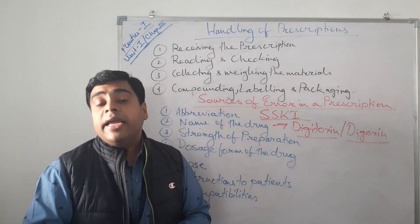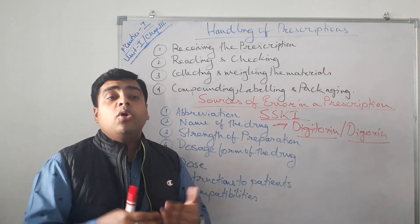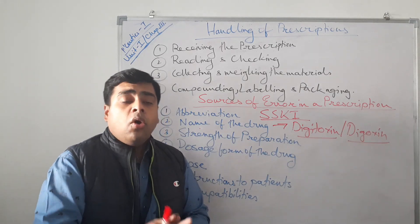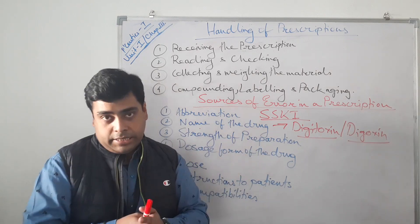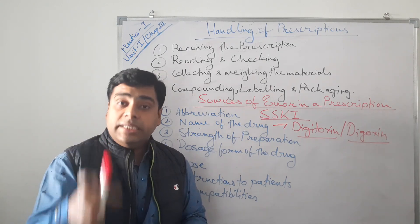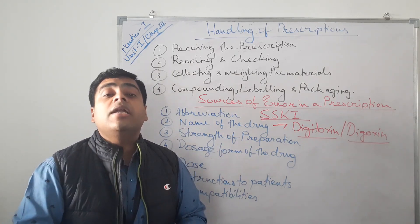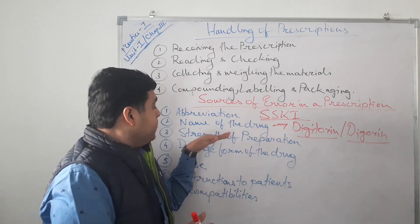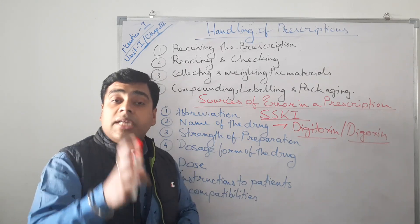The last source of error is incompatibilities, which is a detailed separate chapter. Incompatibility means any sort of undesired reaction — whether due to hypersensitivity or physical reasons — that results in an incompatible formulation. Incompatibilities must be identified in the prescription itself, and an incompatible prescription must never be dispensed. So the common sources of errors are: abbreviations, common drug names, strength, dose, instructions, and incompatibilities.